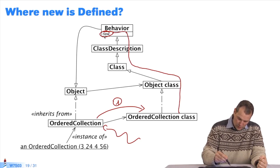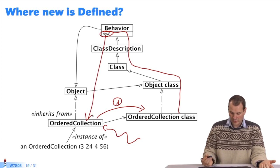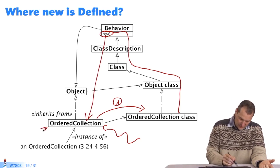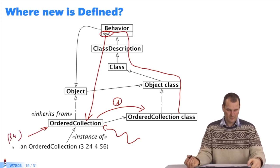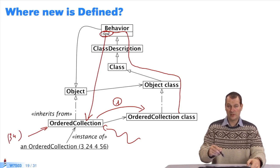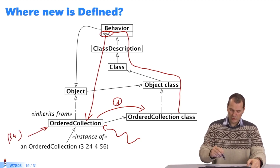So, I find the new method and execute it on the receiver. The class ordered collection, which creates a new instance that we'll name 3, 4, for example. Okay? We're using the key I spoke about. We search the inheritance chain, starting with the receivers class.